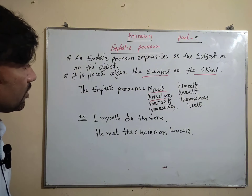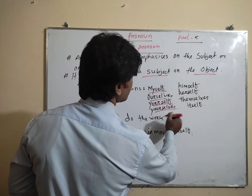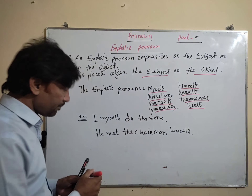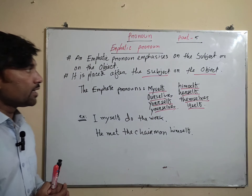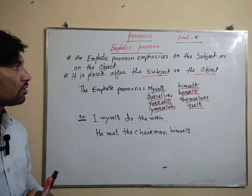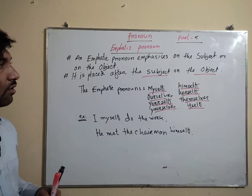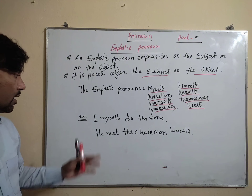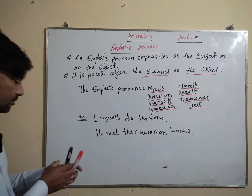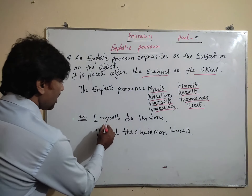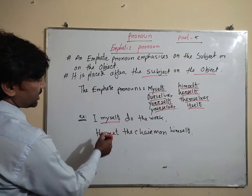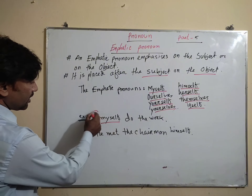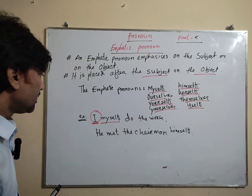Himself, herself, themselves, and itself — these are the emphatic pronouns, and they always emphasize on the subject or on the object. Now, two examples. First: 'I myself do the work.' Here, 'myself' is an emphatic pronoun because it is placed after the subject and emphasizes the subject.